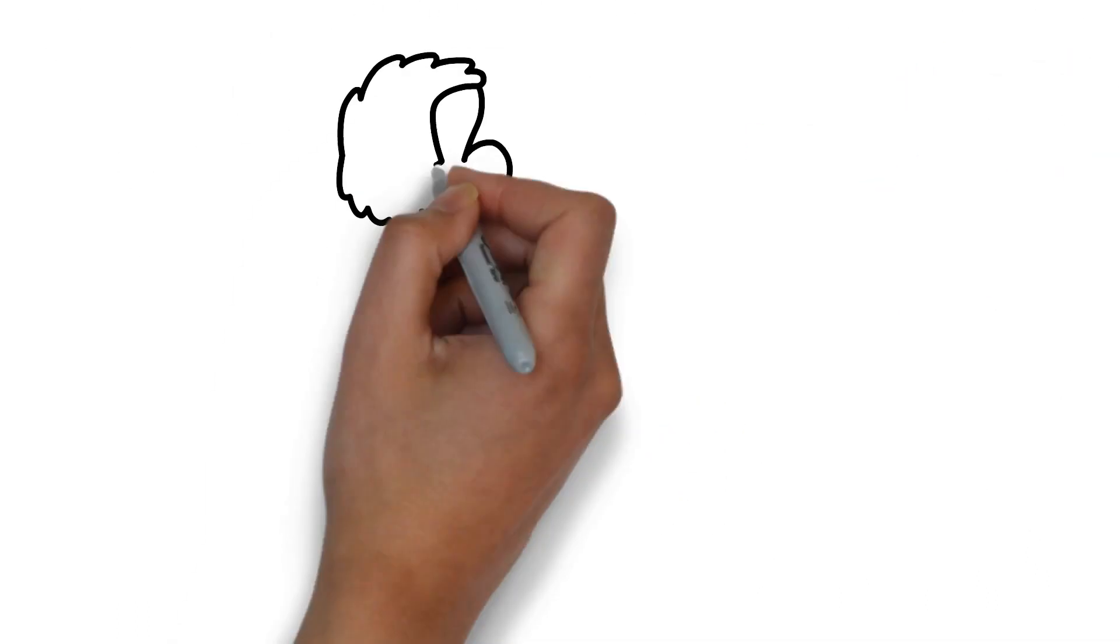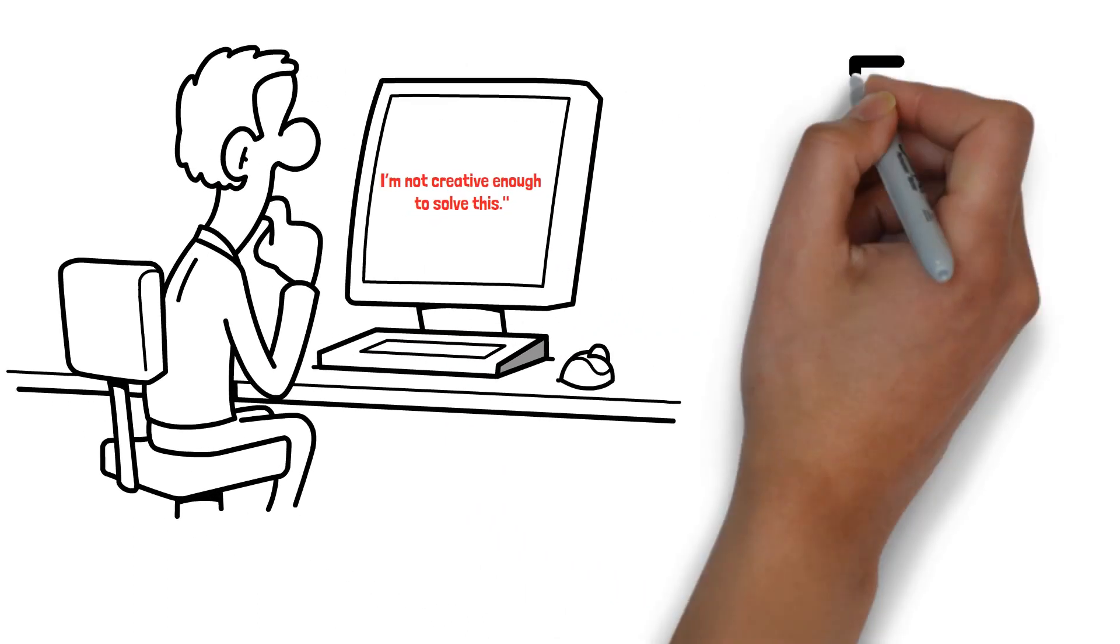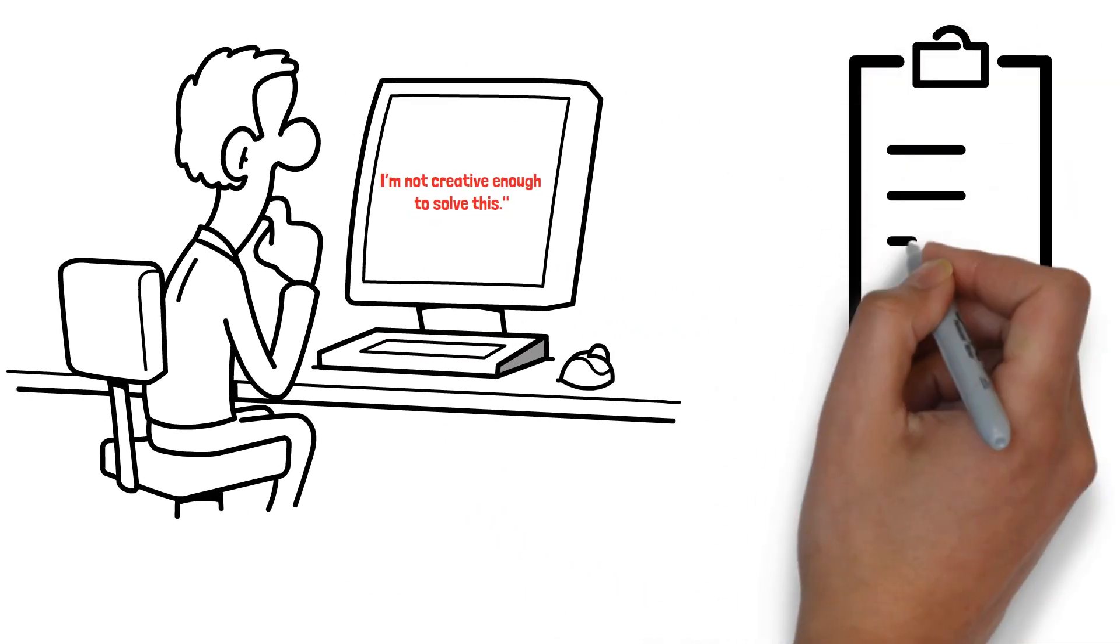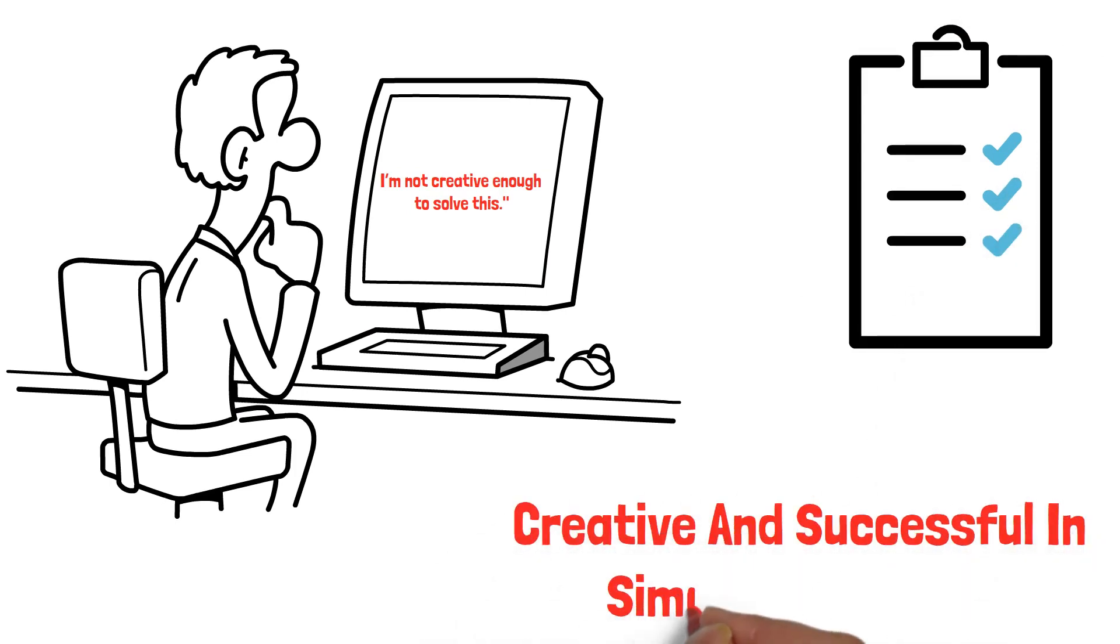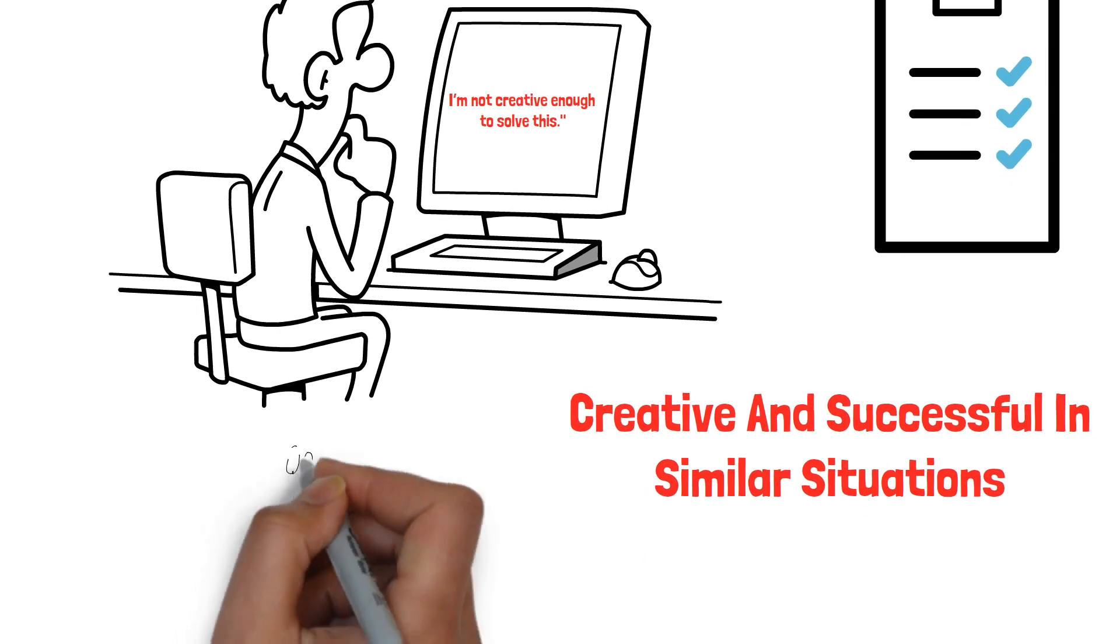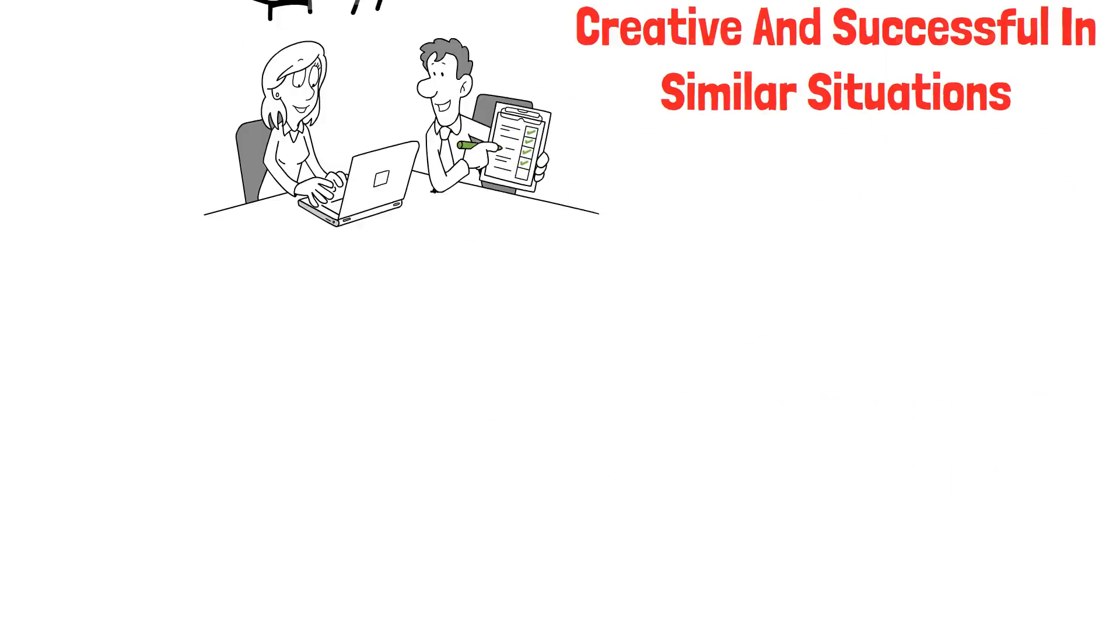Let's say you're stuck on a project and start thinking, I'm not creative enough to solve this. On your thought record, you would counter this by listing evidence that disproves this belief, such as recalling times when you have been creative and successful in similar situations. This practice encourages a healthier thought pattern and reinstates your creative confidence.